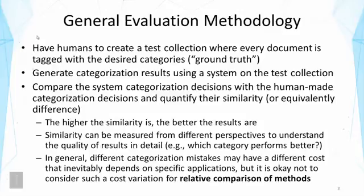For evaluation of empirical tasks such as categorization, we use a methodology developed in the 1960s by information retrieval researchers called the Cranfield evaluation methodology. The basic idea is to have humans create a test collection where every document is already tagged with the desired categories — or in the case of search, for which query which documents should have been retrieved. This is called ground truth. With this ground truth test collection, we can reuse the collection to test many different systems, compare them, and turn off components to do controlled experiments. This methodology has been virtually used for all tasks that involve empirically defined problems.